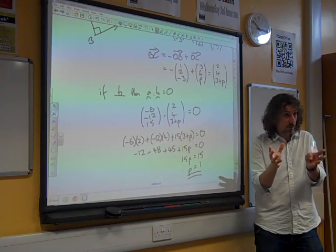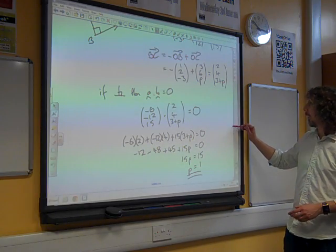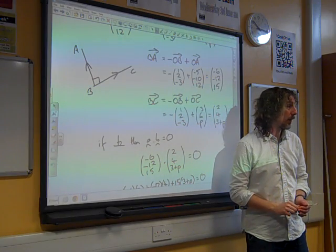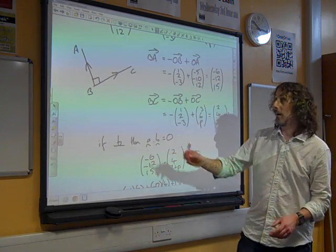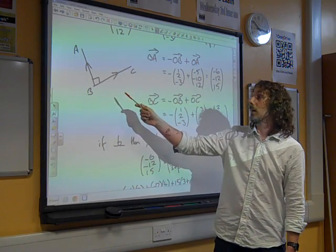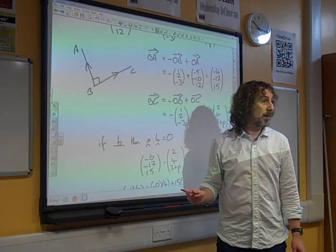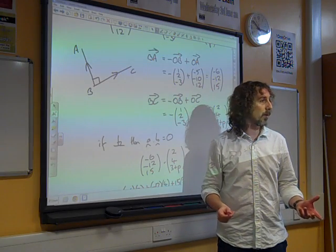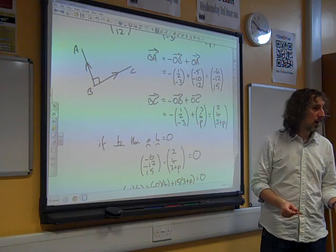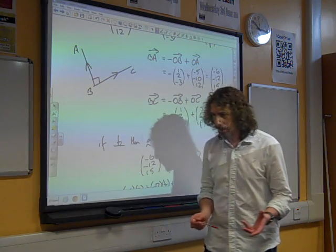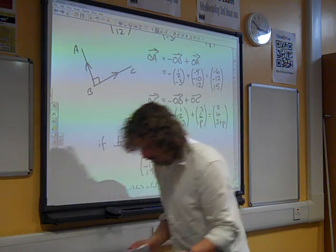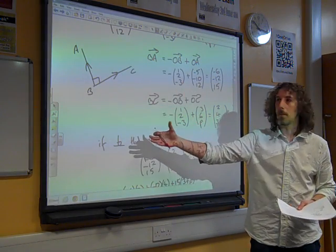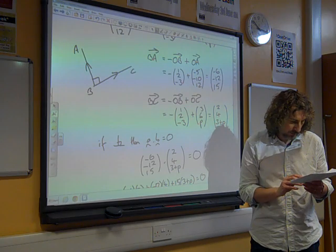Just one little kind of aside on this to notice. Because these two lines are perpendicular, if you'd found the vector AB and the vector BC, then you would still have got the right value of P, wouldn't you? Because they still would have been perpendicular. And I think we would have probably got all of the marks. But it's not quite as nice, is it? I mean, you know, it's better to actually think it through properly and make sure that we're getting the right vectors.